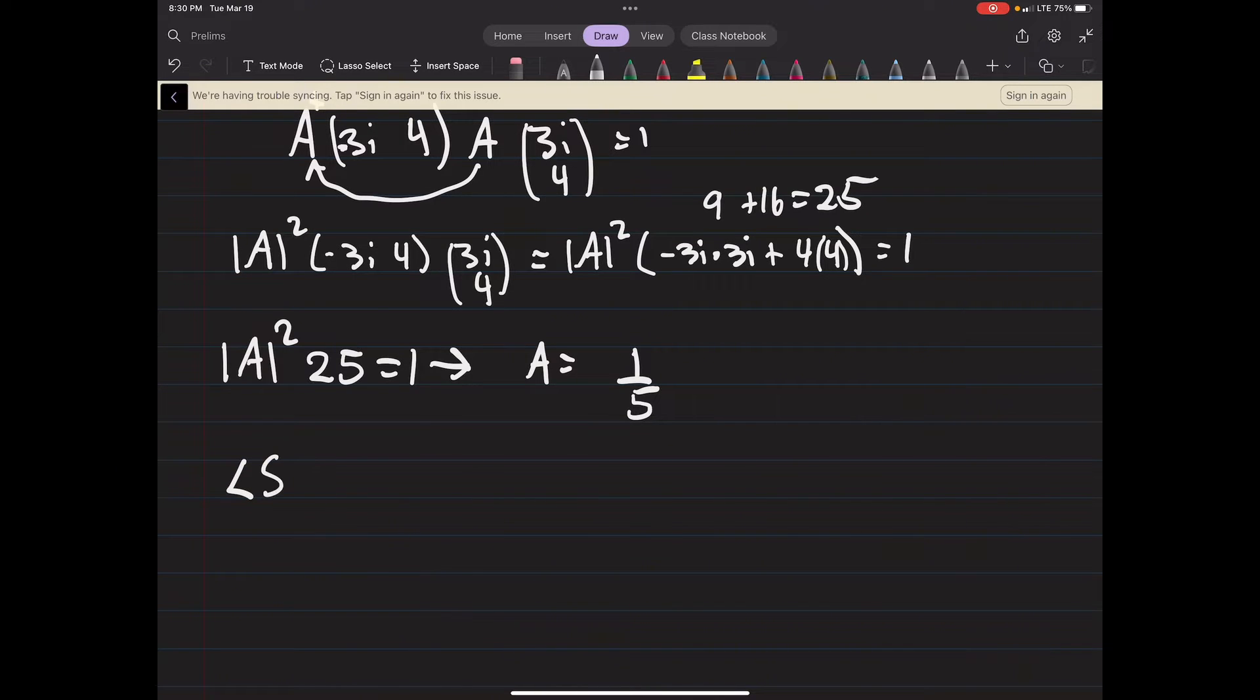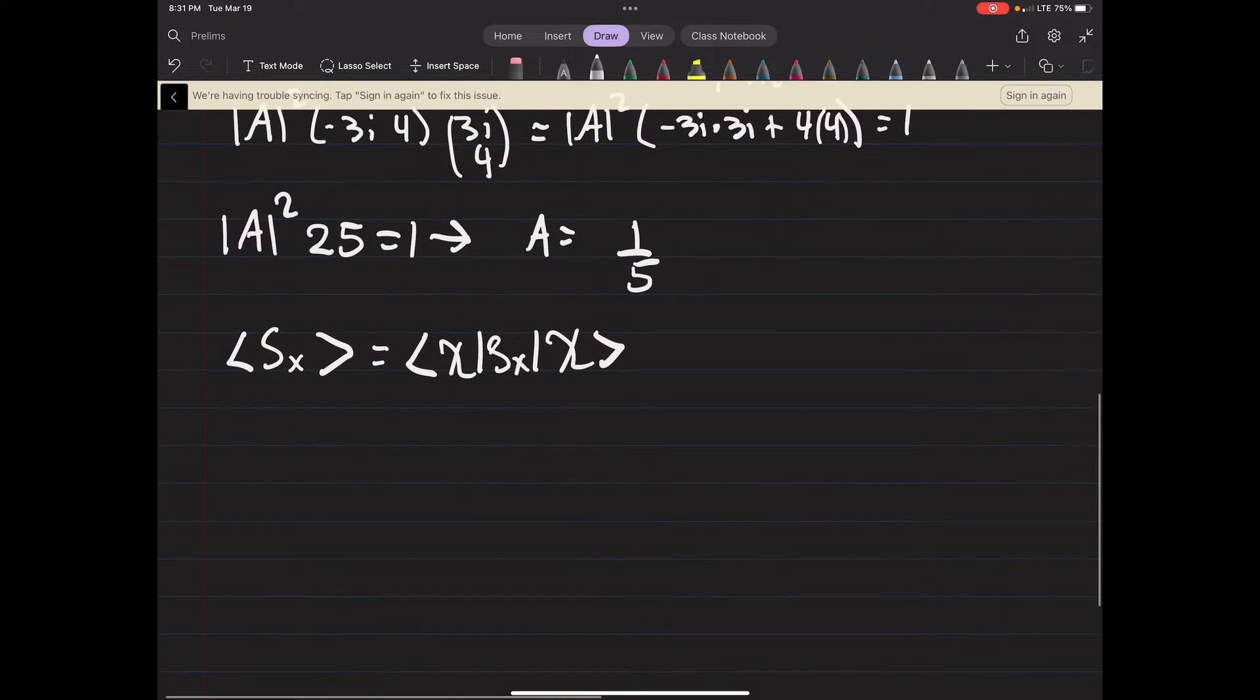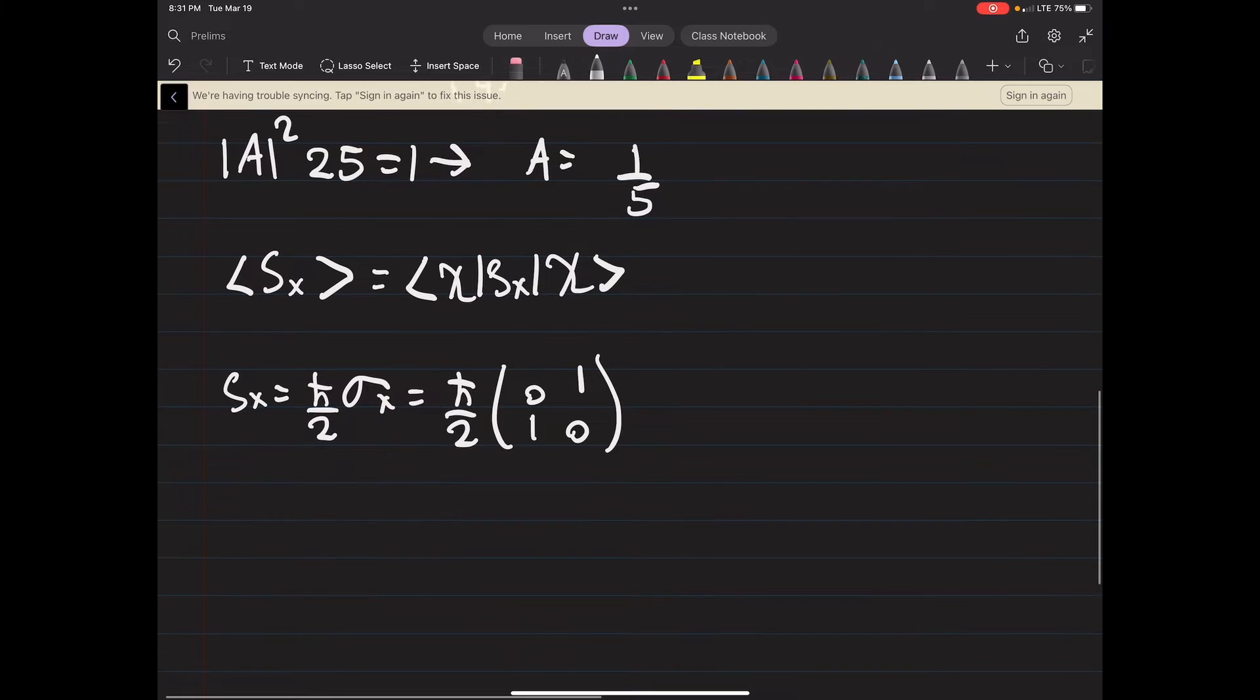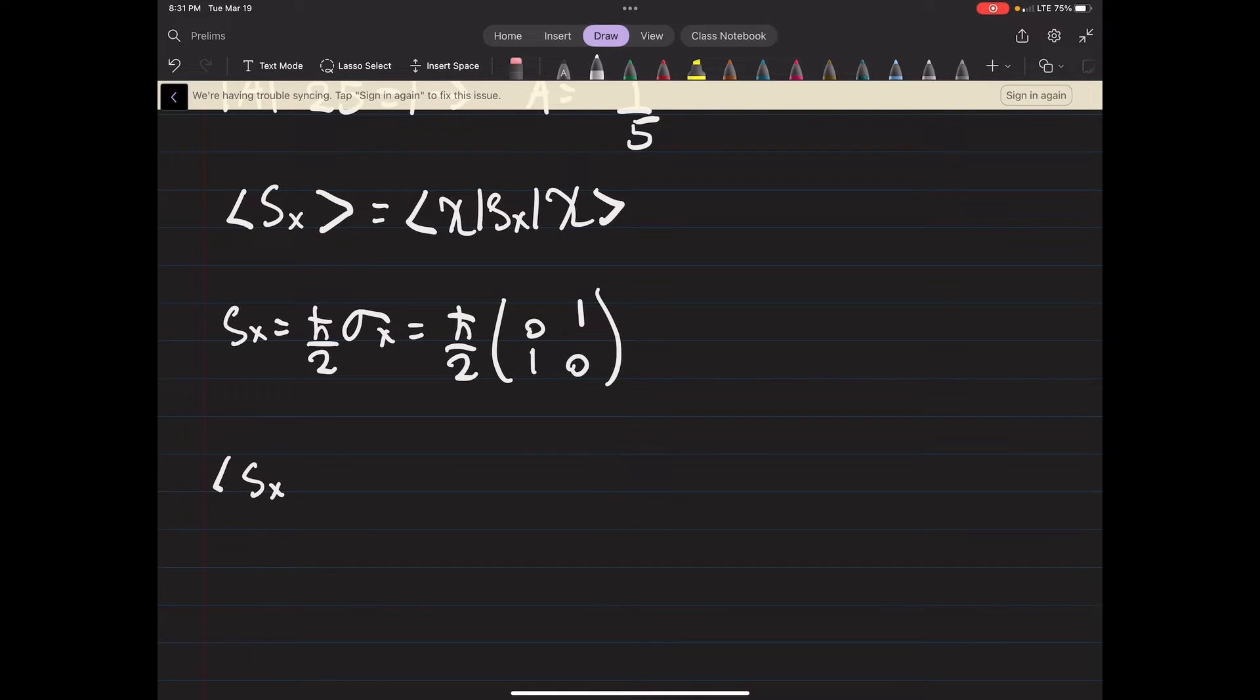Now we want to find our expectation values for our spin in the x, y, and z direction. This is exactly the same way we would calculate expectation values with our wave function. So all that we're going to do is in between our chi's here we're going to squish in our S of x. So S of x is going to be h bar over 2 and then the Pauli spin matrix, and in this case sigma x is (0,1; 1,0).